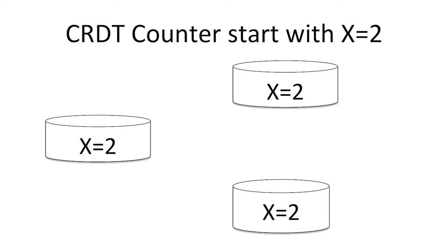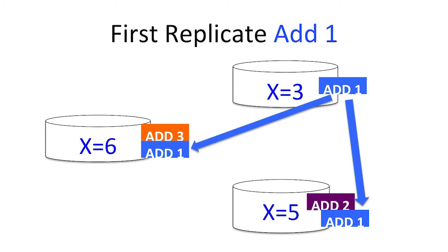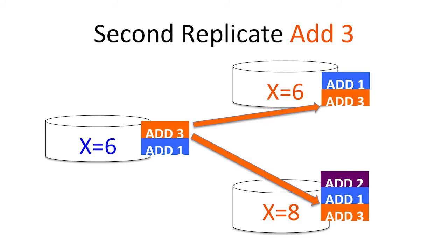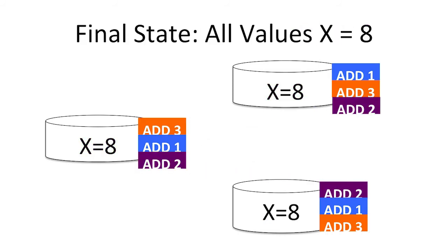Everybody starts with X equals 2. The top actor adds 1, the bottom adds 2, the left adds 3 — all at the same time. We replicate the modifications, and this can happen in any order. The final state always comes out to 8. If you start with 2 and add 1, 2, and 3 in any order, you always arrive at 8. That's a simple example of how you can arrive at the same final state with zero coordination, meaning you don't pay latency penalties.